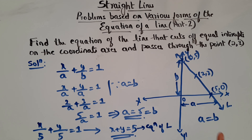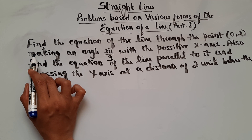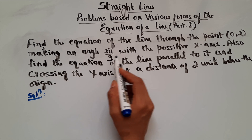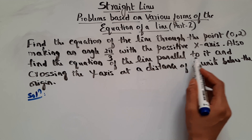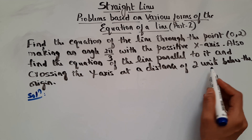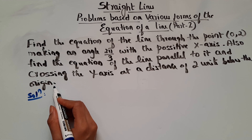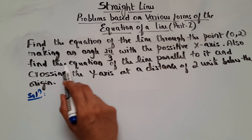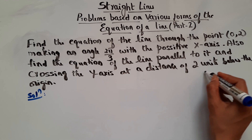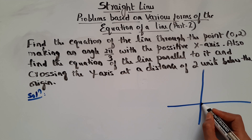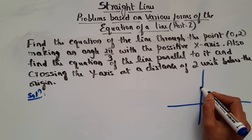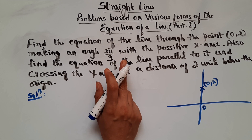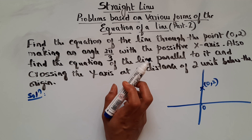Now let's see the last problem. Find the equation of the line through the point (0,2) making an angle 2π/3 with the positive x-axis. Also find the equation of the line parallel to it and crossing the y-axis at a distance of 2 units below the origin. So there are two parts. For the first part: the point is (0,2) and 2π/3 is 120 degrees.